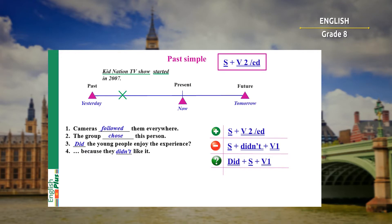Now let's practice. Look at exercise number one. Complete the sentences with the correct form of the past simple verbs in brackets. You have three minutes.